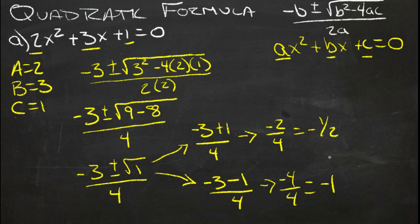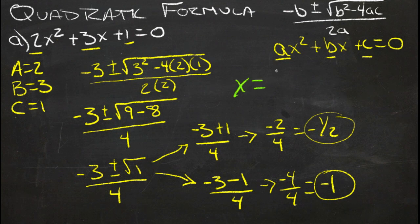So our two solutions, our two x-intercepts, are negative 1 half and negative 1. And we can write that as x equals the set including negative 1 half and negative 1. And that's all there is to it.